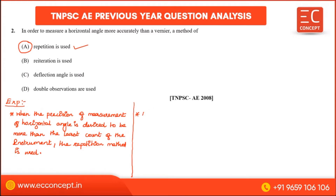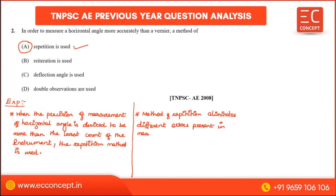Method of repetition eliminates different errors present in the measurement of horizontal angle. They are as follows. First: error due to eccentricity of vernier.